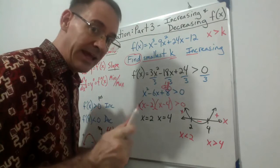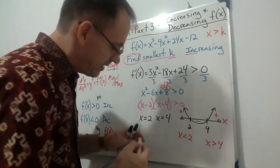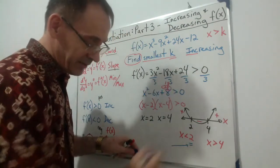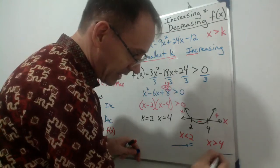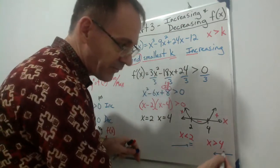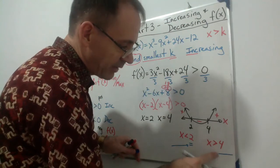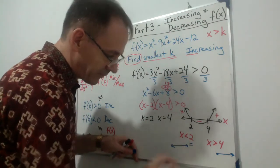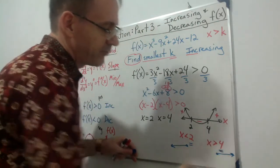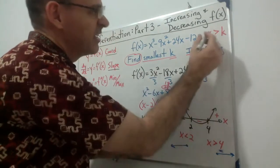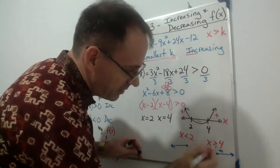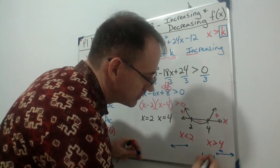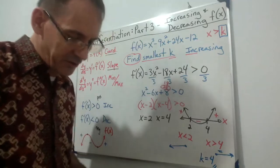We're looking for x > k, which matches the interval x > 4. On that interval, 4 is the smallest value — you can have 4, 5, 6, 7, and so on. So k equals 4. That's our answer for this example.